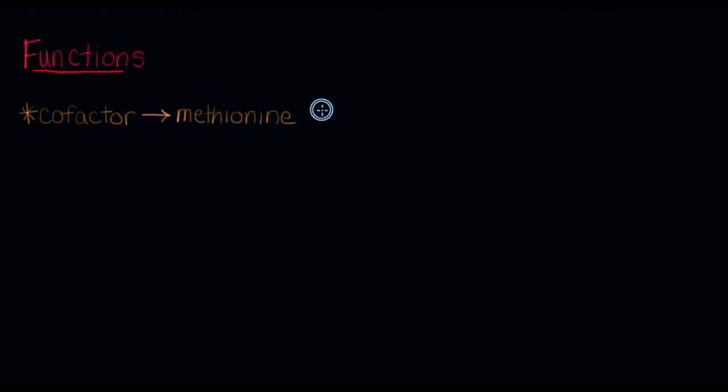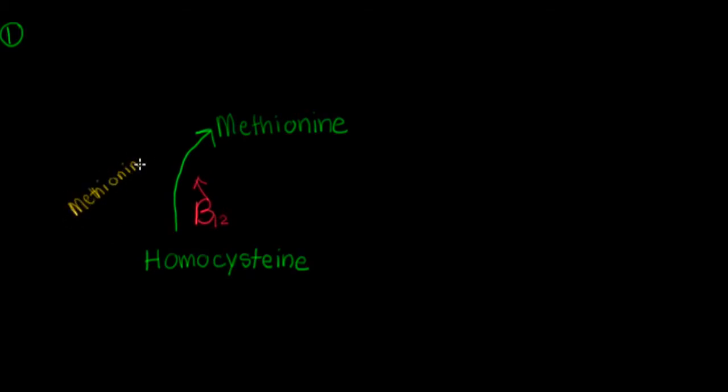B12 has many functions, but its primary role as a cofactor really involves many of the things we've been learning about in other videos. One of our first enzymes, methionine synthase, which we're going to indicate in yellow, generates methionine from homocysteine. When homocysteine accumulates in the body, it increases the risk for cardiovascular disease. In order to create methionine, we combine vitamin B12 and methionine synthase to make methionine.